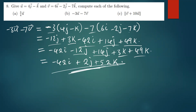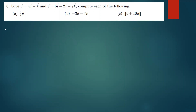We now move on to the last part of this question, which asks us to first add the vector v to 10u, and then find the magnitude of the resulting vector. So we need to evaluate the absolute value of v plus 10u.